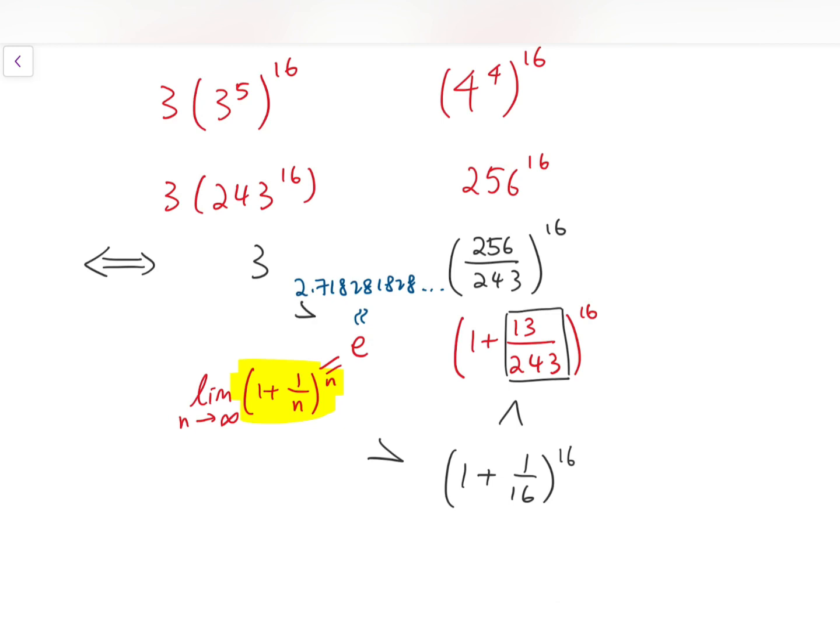And so, we can build a chain of comparison, starting from the red expression, it's smaller than 1 plus 1 over 16 all to the power n, is smaller than the infinity case, which is e, and it's smaller than 3. And then, we'll finish our comparison.